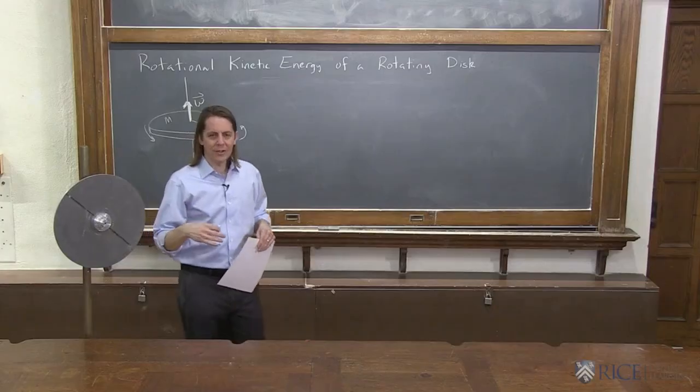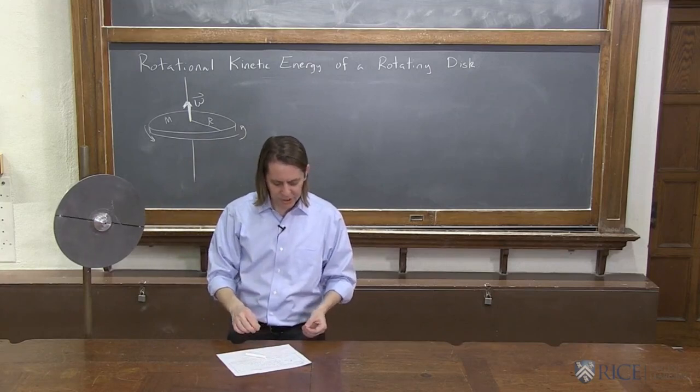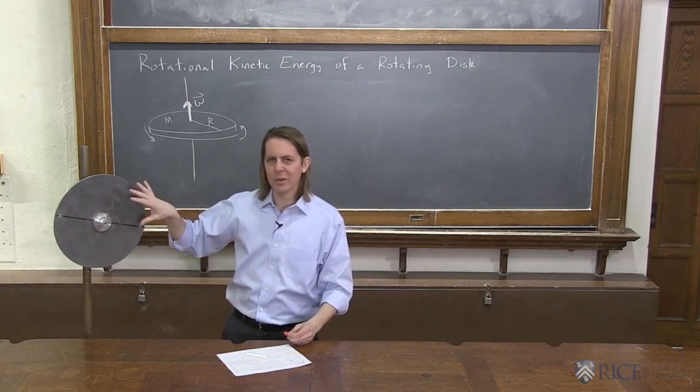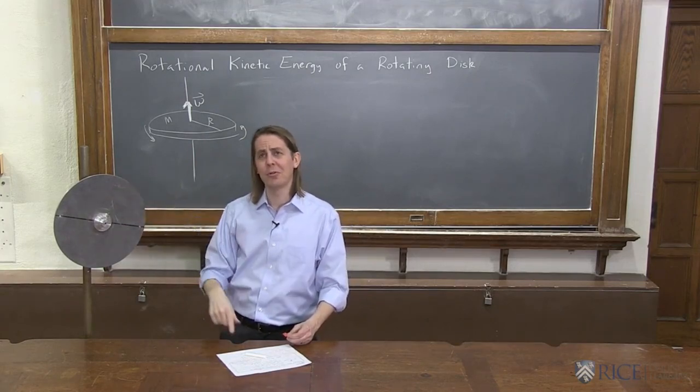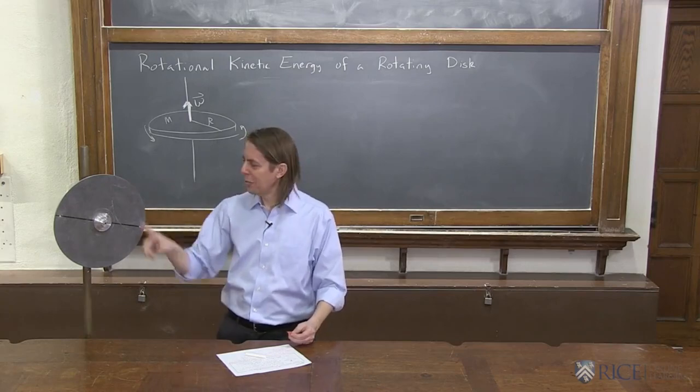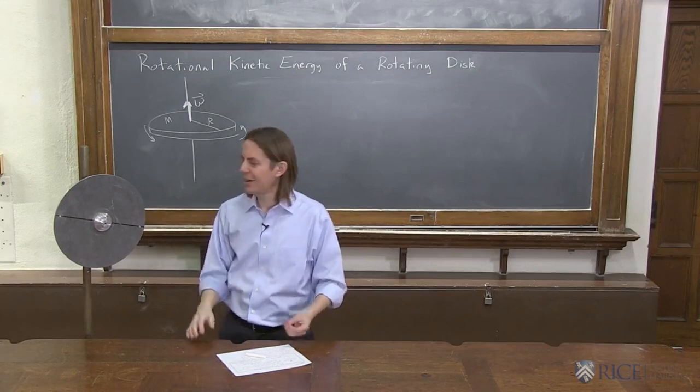So what we're going to do to calculate the rotational kinetic energy, if you think about it, from what we learned before, every piece of the disk is going at a different speed. So if we go back to our translational kinetic energy, it's 1/2 mv squared. If we break this up into little m's, they're all going at different speeds. So we kind of are going to have to do something strange.